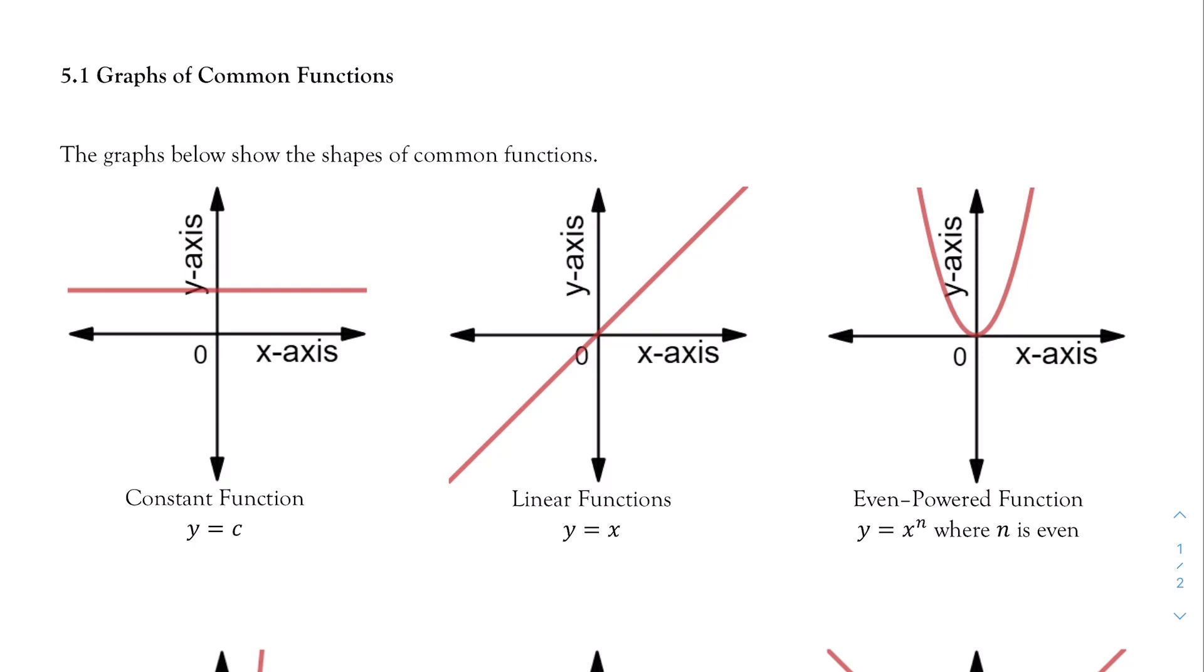My second common function is a linear function, again something that we're familiar with. We spent an entire couple of sections talking about lines. As it turns out, every line that we've been looking at was actually a linear function itself, the only exception being x is equal to a number because that was a vertical line and not a function.